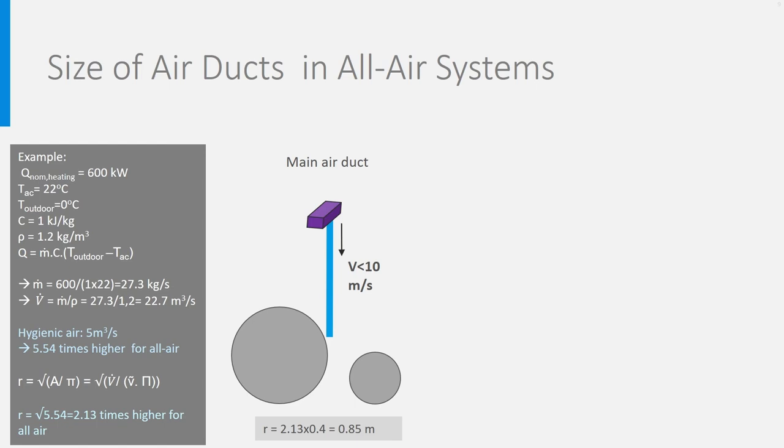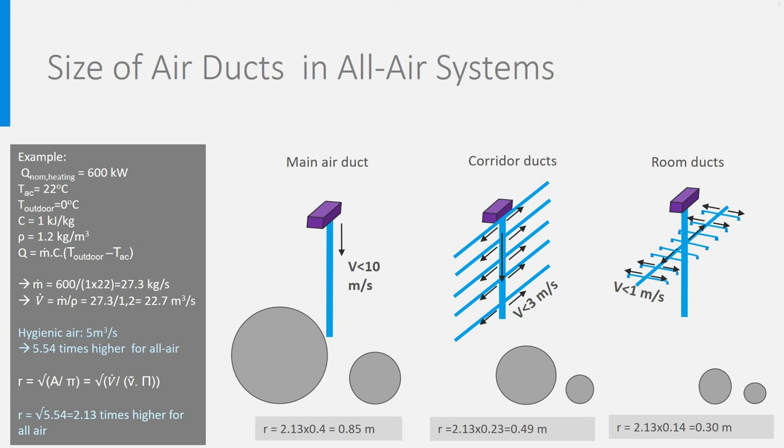In our case, this leads to a main air duct of 1.70 meter diameter, corridor ducts of 98 cm, and room ducts of 60 cm diameter. This means something for the spatial design and the space the architect should reserve. If the pipes are also meant to transport cold air, you also need to check that the pipe sizing is large enough to transport the needed cold. You will then choose the highest diameter of both heating and cooling modes.